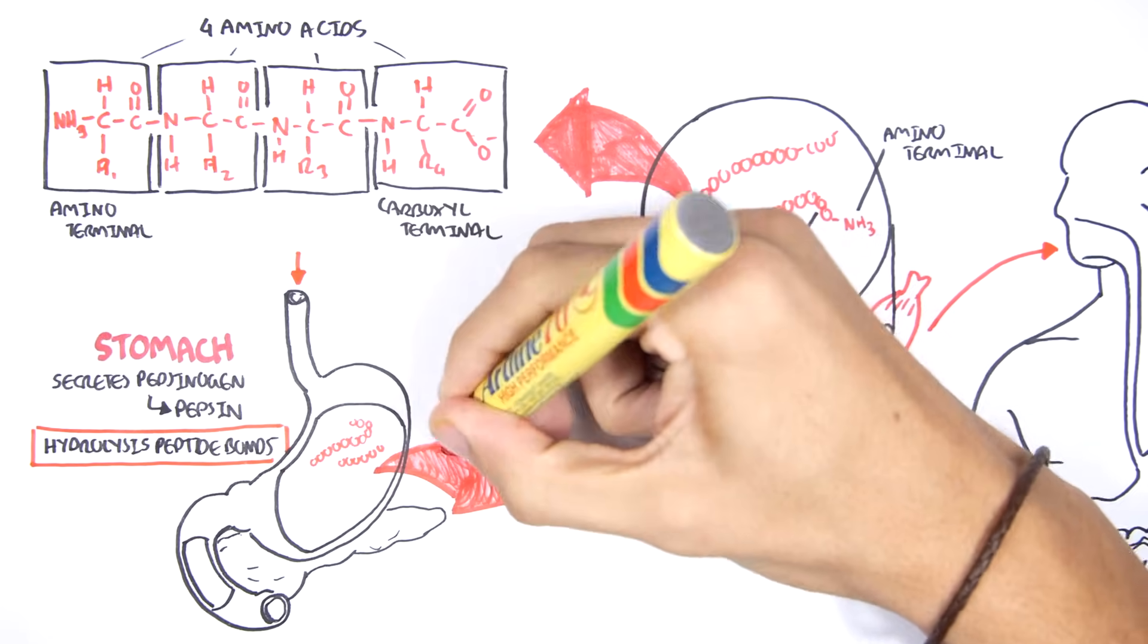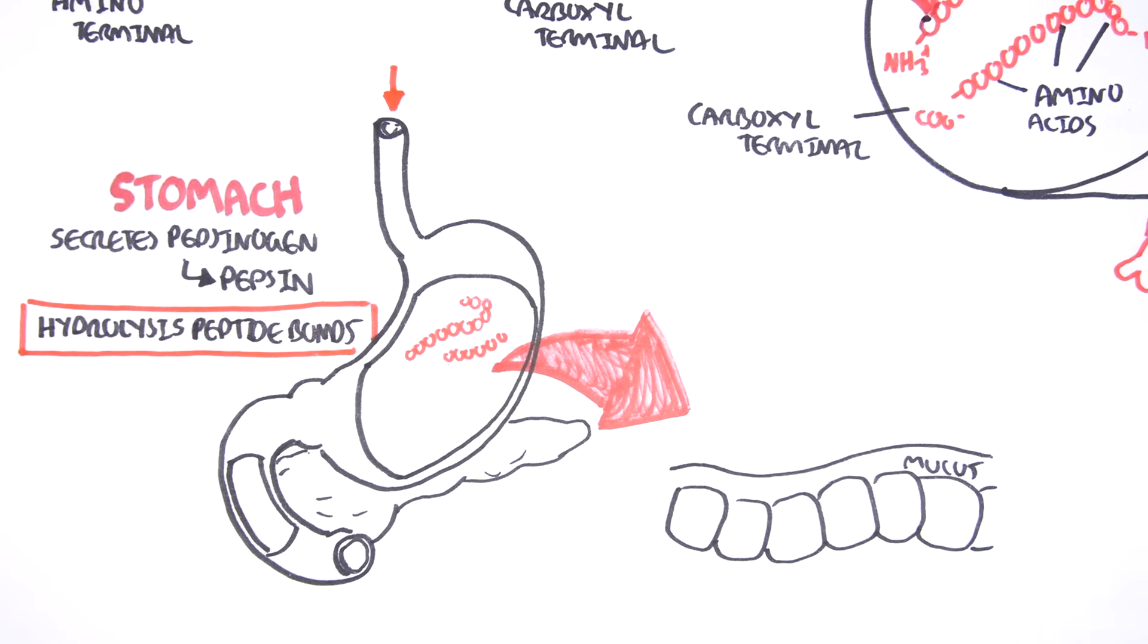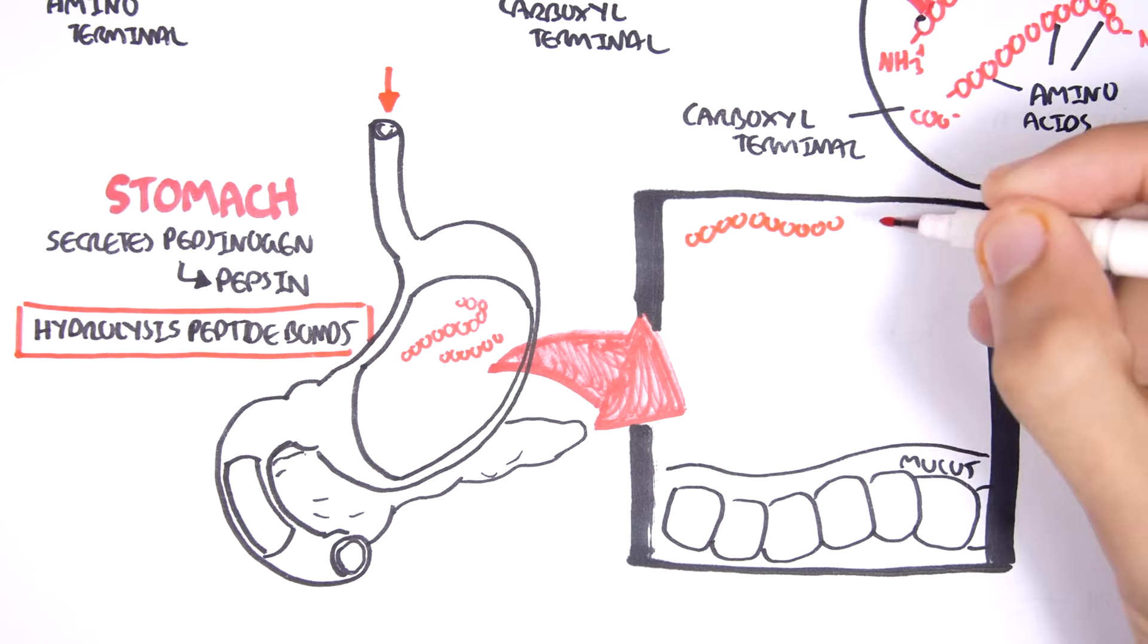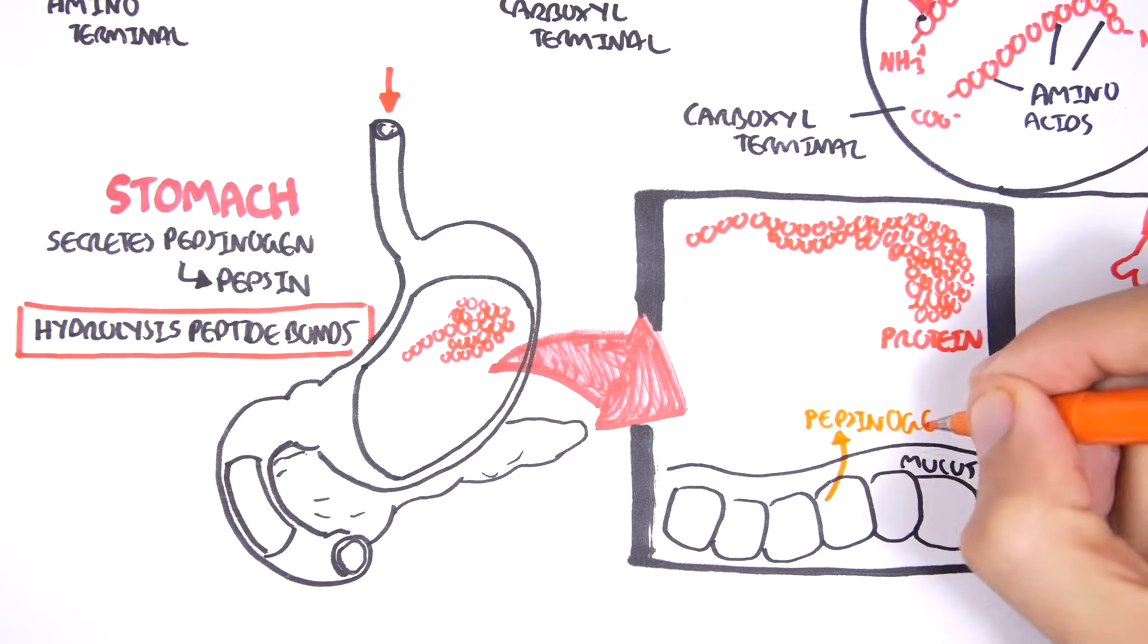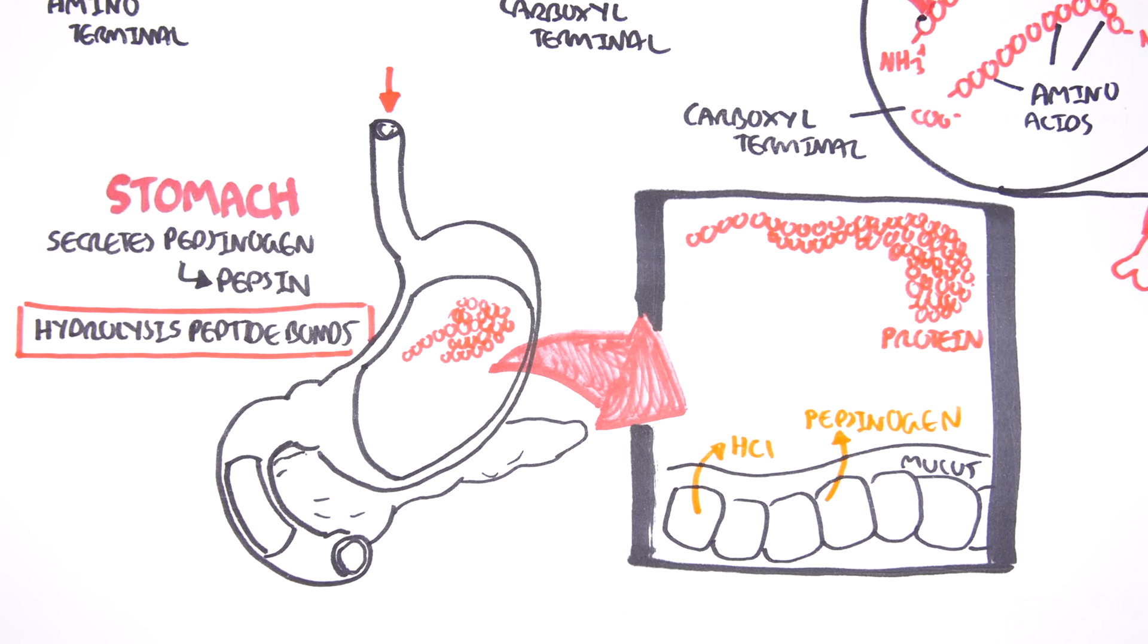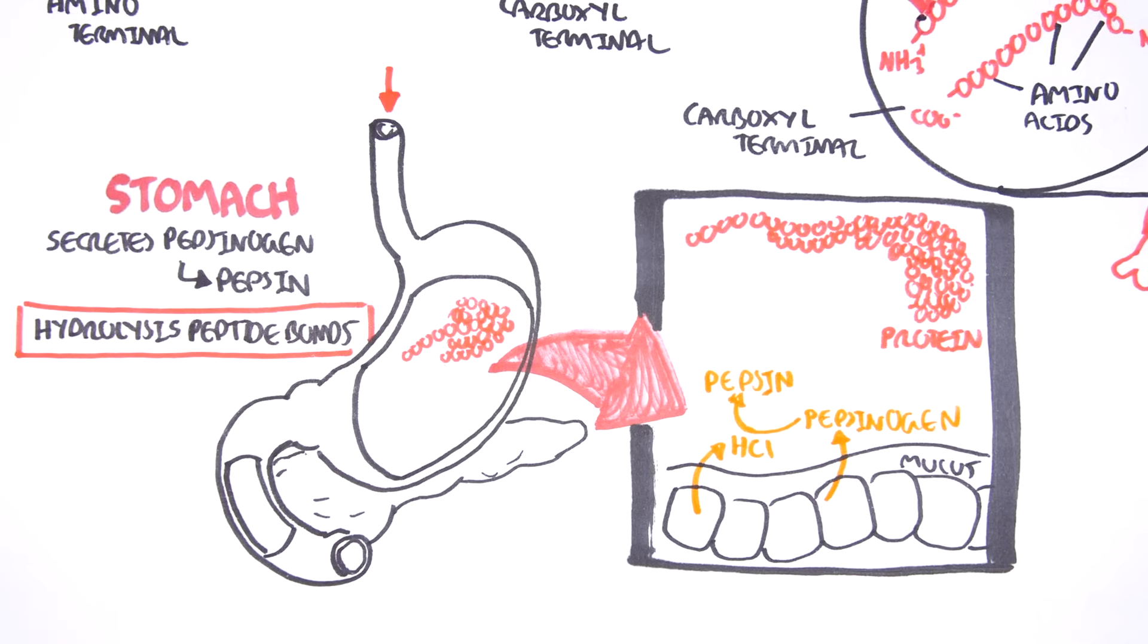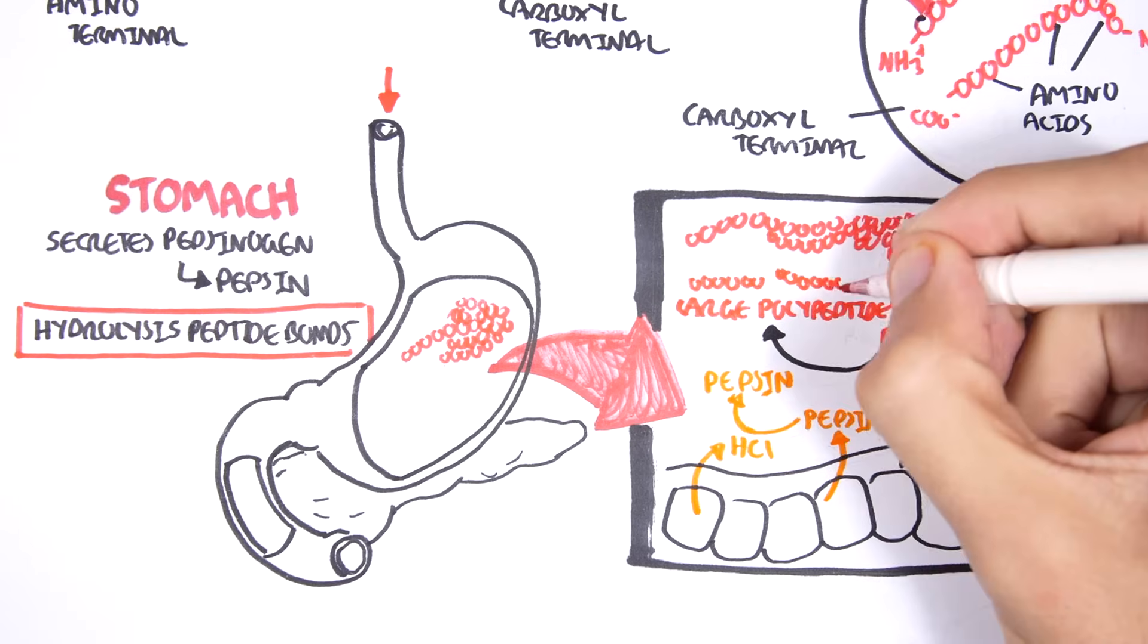Let's look at how pepsin becomes activated. If here's your stomach cells, we have mucus on top of these cells. And here is the protein in the lumen. The stomach cells will begin secreting pepsinogen in the presence of food. At the same time, hydrochloric acid will be secreted to assist in breaking down the food. It's actually the hydrochloric acid that triggers the conversion of pepsinogen to pepsin. And so now pepsin is able to hydrolyze the peptide bonds, breaking down the protein to large polypeptides.